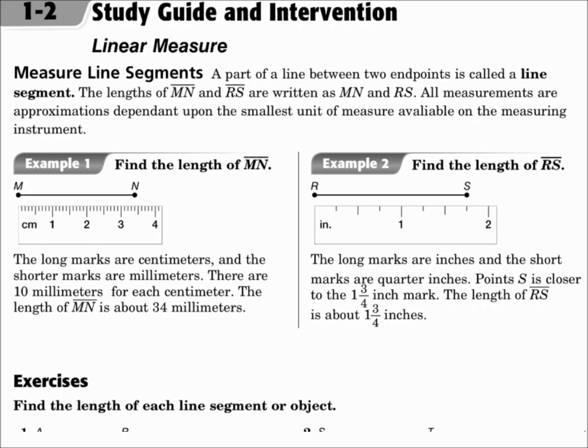The length of segment MN and segment RS are written as MN and RS. When they're written like this, they're referring to the number value of how long they are. All measurements are approximations dependent upon the smallest unit of measure available on the measuring instrument.